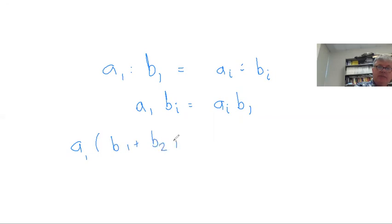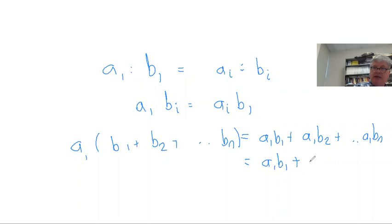Okay, so if we look at a₁ times the sum of all the consequents, we can multiply that out and get a₁b₁ plus a₁b₂ plus all the way to a₁bₙ. Then this is going to be the same thing as a₁b₁, but a₁b₂ is going to be the same thing as a₂b₁.